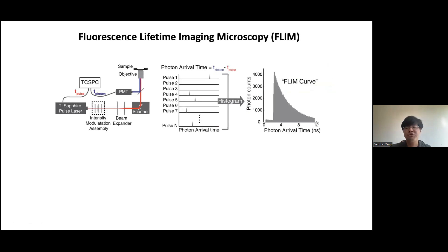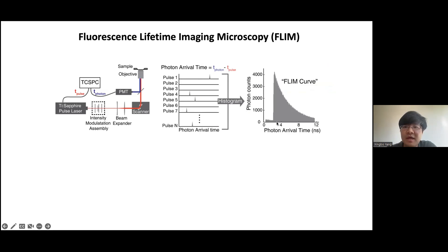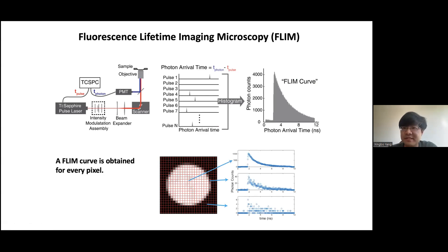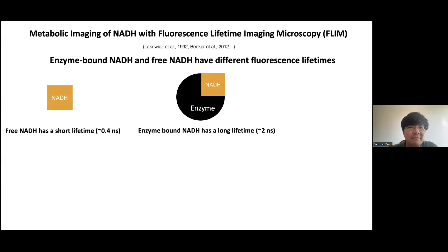We send a train of pulses to our sample — each pulse separated on the timescale of nanoseconds. Some pulses have the probability of exciting a photon. Using single photon counting, we build what is called a FLIM curve that plots the photon counts versus the photon arrival time associated with each pulse. Since it's an imaging technique, we can obtain those FLIM curves with optical resolution at each pixel.